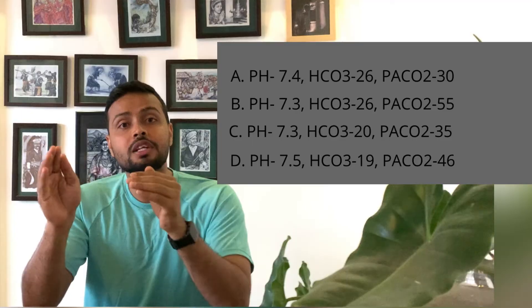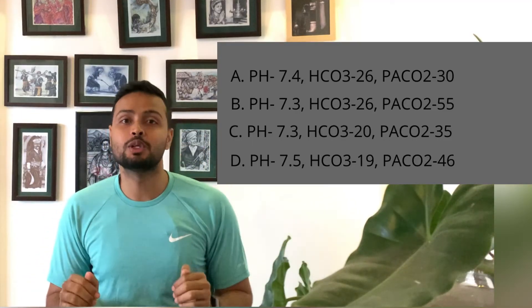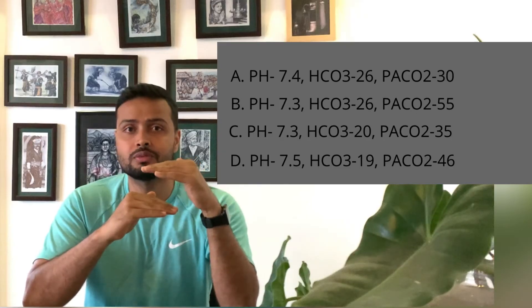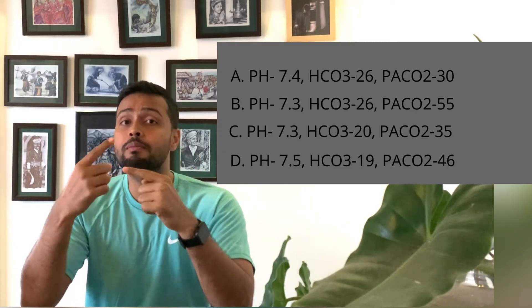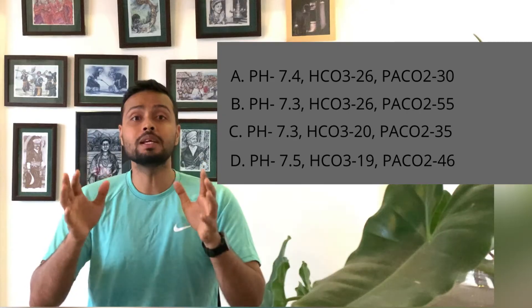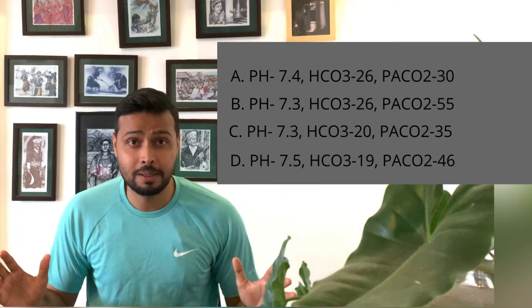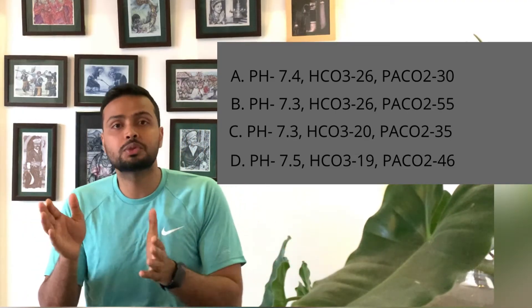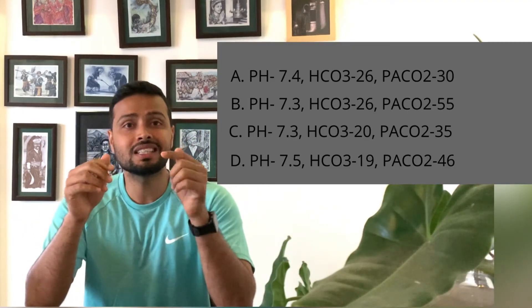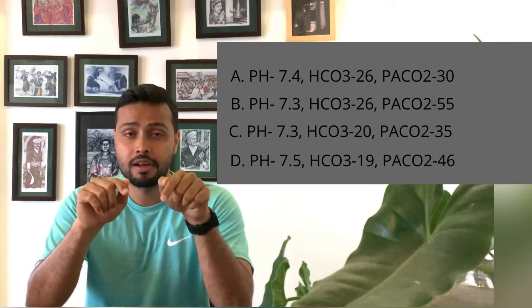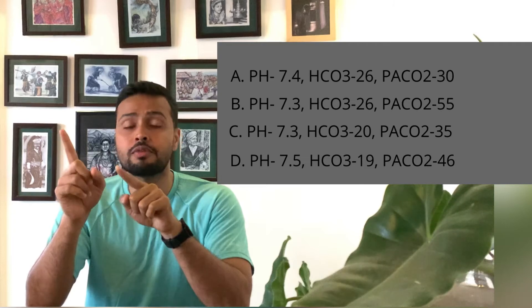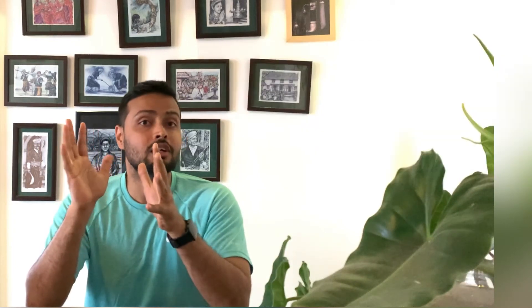Looking at the options, we have narrowed it down to option C and option D, both of which have HCO3 values less than 22. Now, remembering that pH is the father of this family — if pH is less than 7.35 it is acidosis, and if it is more than 7.45 it is alkalosis.